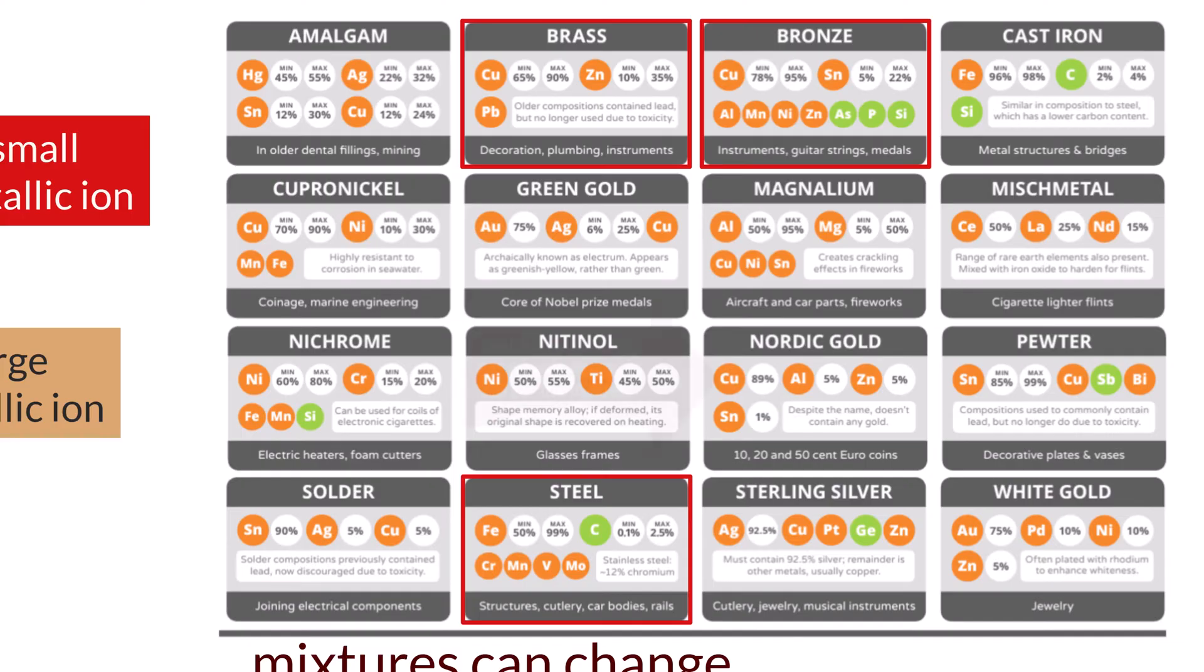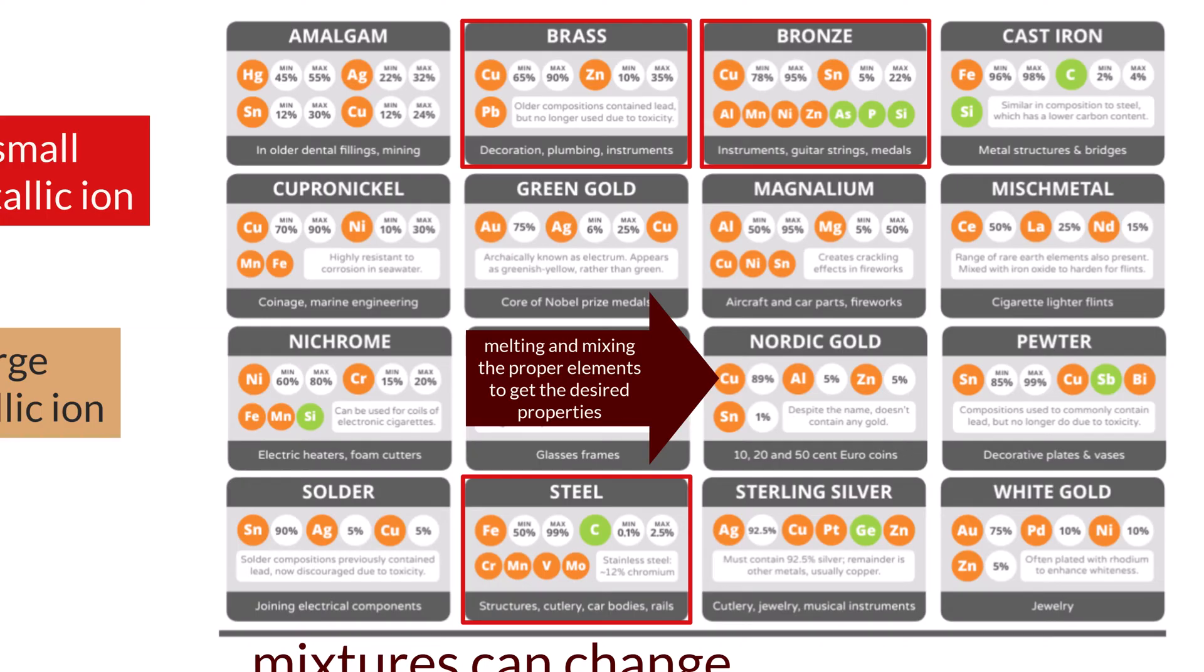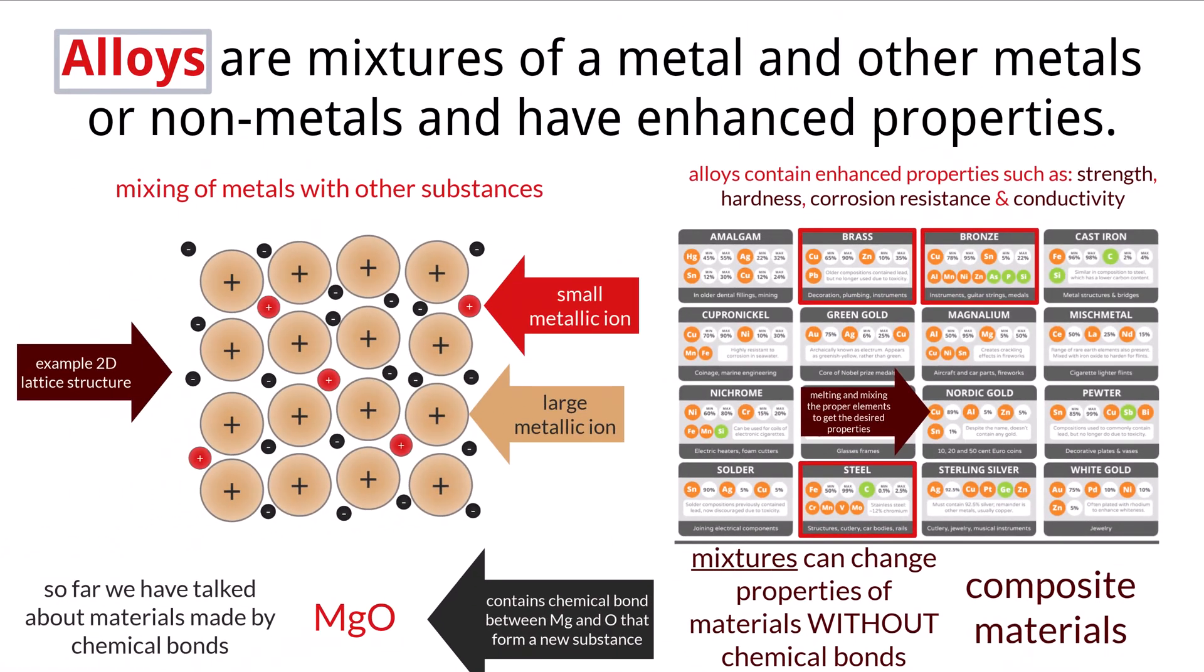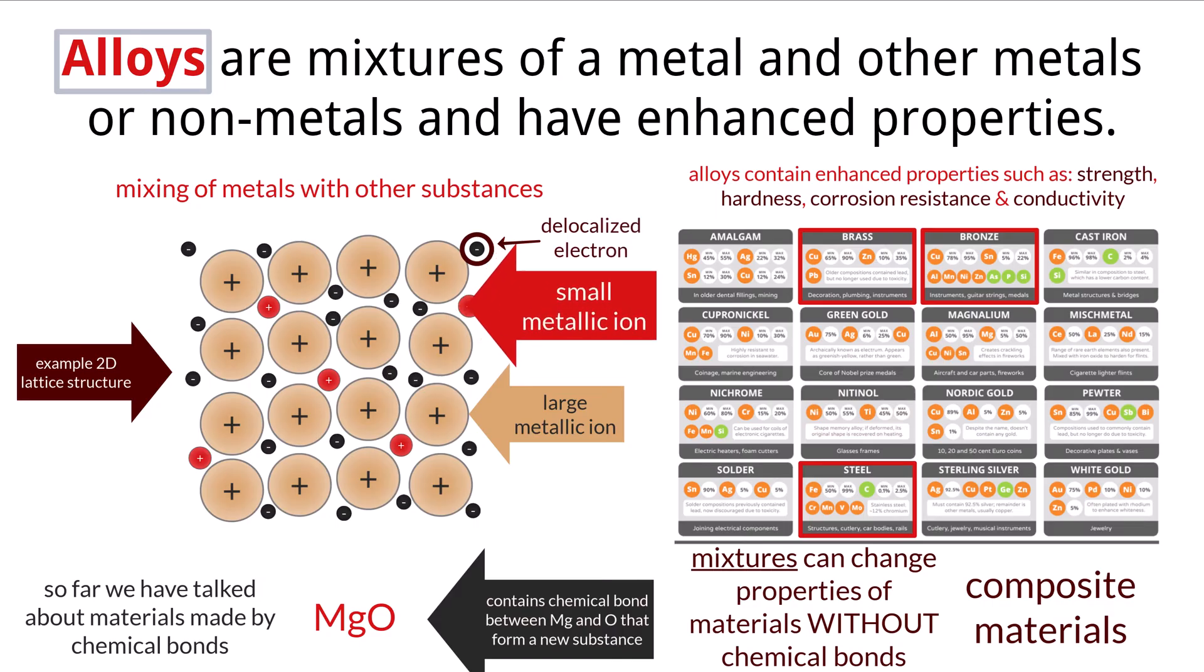The process of creating an alloy involves melting and mixing the constituent elements in precise proportions, resulting in a solid solution where the atoms of the different elements are evenly distributed throughout the material. Alloys consist of different metal ions and a sea of delocalized electrons. The smaller cations, in red, are able to fit in the spaces between the larger cations, in tan, in the lattice structure.